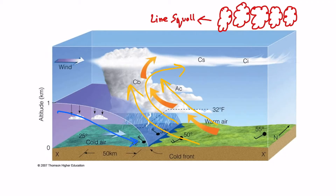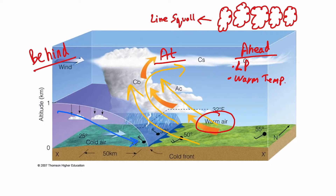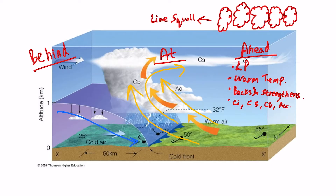Ahead of a cold front we again experience low pressure because the warm air is rising. The temperature is warm because we have warm air ahead. The winds back and strengthen. The clouds observed ahead of a cold front are cirrus, cirrostratus, cumulonimbus, and altocumulus castellanus. These clouds give heavy precipitation and very poor visibility in rain. We can also observe line squalls ahead of a cold front.